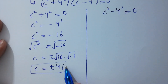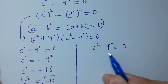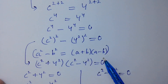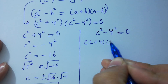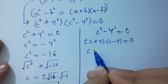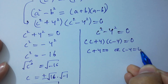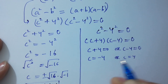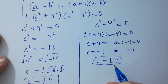From c squared minus 4 squared equals 0, using a squared minus b squared equals (a plus b)(a minus b), it will be (c plus 4)(c minus 4) equals 0. So c plus 4 equals 0 or c minus 4 equals 0, giving c equals minus 4 or c equals plus 4, that is c equals plus or minus 4, which are two real solutions.